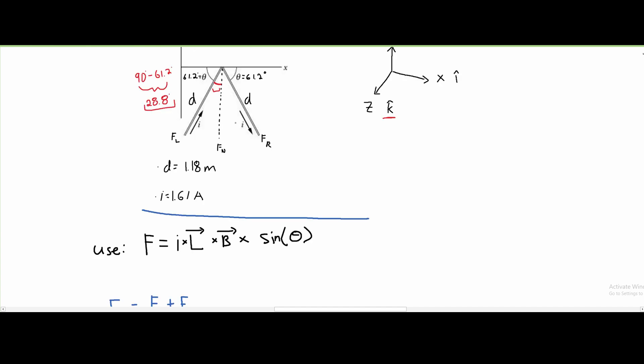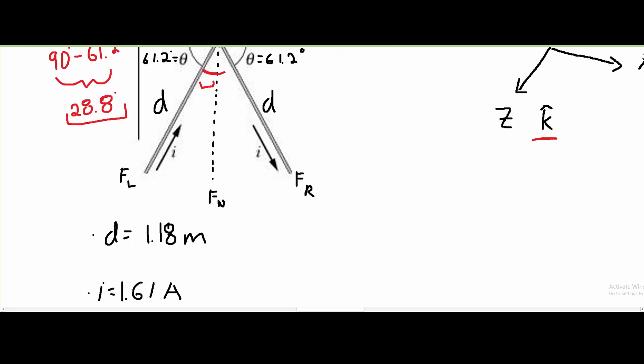If we look at both wires, they're exactly the same. They have the same current i, the same length d, and the same angle. Both of these are the same size.